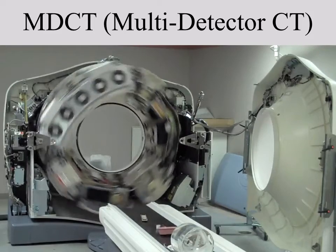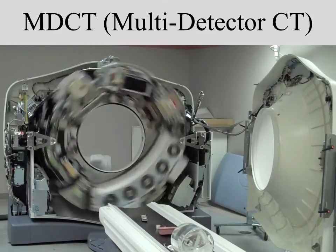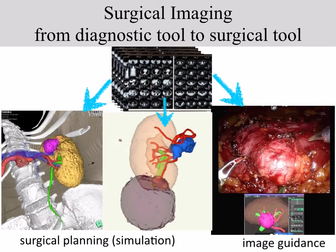Today's advanced high-speed imaging devices, such as 64-row multi-detector CT, contribute to this surgical imaging. The slice thickness has become smaller and smaller, reduced to the ideal size. Today, we can use CT data as the material to make surgical planning and also surgical navigation. The development of imaging solutions allows us to make this possible.